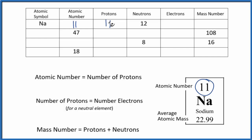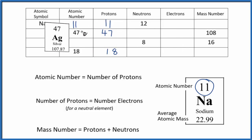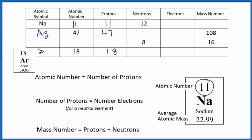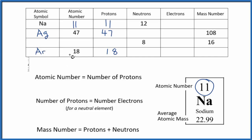Let's fill some other information in. If our atomic number is 47, we'll have 47 protons. With atomic number 18, we'll have 18 protons. We can also work backwards — we look on the periodic table, find atomic number 47, which turns out to be Ag, silver. And atomic number 18 turns out to be argon.